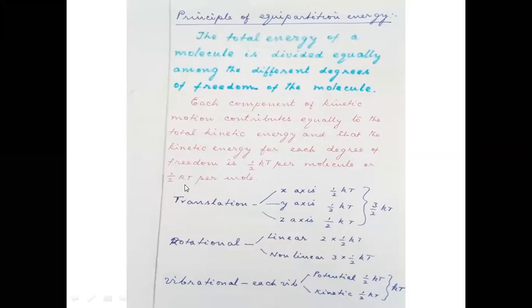Each mode contributes ½kT per molecule, or ½RT per mole. Here k is Boltzmann's constant — ½kT per molecule for one molecule. If you take one mole, then ½kT multiplied by Avogadro's number gives the value for one mole. Avogadro's number multiplied by Boltzmann's constant equals the universal gas constant R, so that equals ½RT per mole.